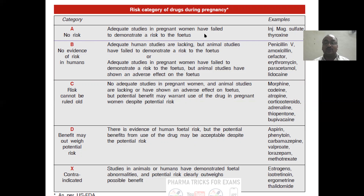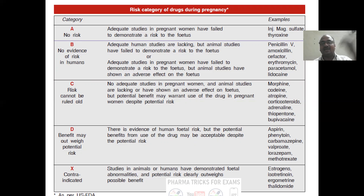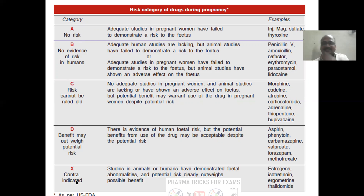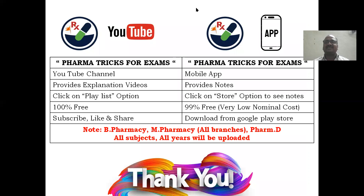The risk category of drugs during pregnancy is divided by the USFDA. Category A: no risk at all — example is thyroxine. Category B: no evidence of risk, may produce effects but evidence is not there. Category C: risk cannot be ruled out, there may be a chance of risk. Category D: benefit may outweigh risk — only prescribe if benefit outweighs harm. Category X: contraindicated — you should not use these drugs during pregnancy.